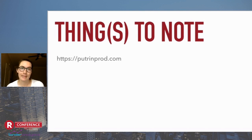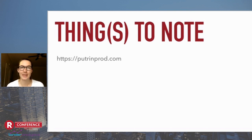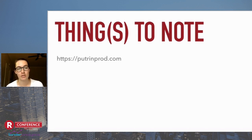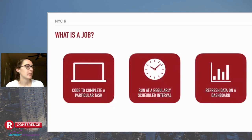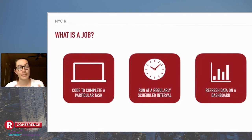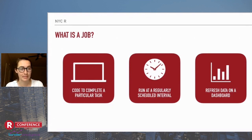Let's start out by talking about what I mean when I say job. When I'm talking about production code throughout this talk, job is the term I'll use. I might use them interchangeably, but a job is just a piece of code written to complete a particular task that runs at a regularly scheduled interval. For example, to refresh data on a dashboard, I'd have code that kicks off at a certain time of day and runs without me having to run things manually at all.